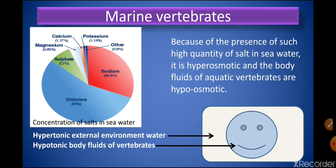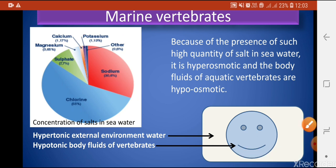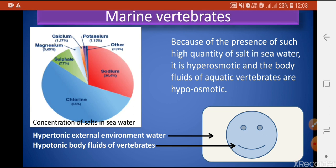We will first discuss marine vertebrates. In the diagram we can see the high concentration of salts in sea water, which comprises chlorine, sodium, sulphate ions, potassium, calcium, magnesium, and some other salts. Because of this, sea water is hyperosmotic and the body fluids of aquatic vertebrates living in it are hypoosmotic — the external environment is hypertonic while the bodies of these vertebrates are hypotonic in nature.